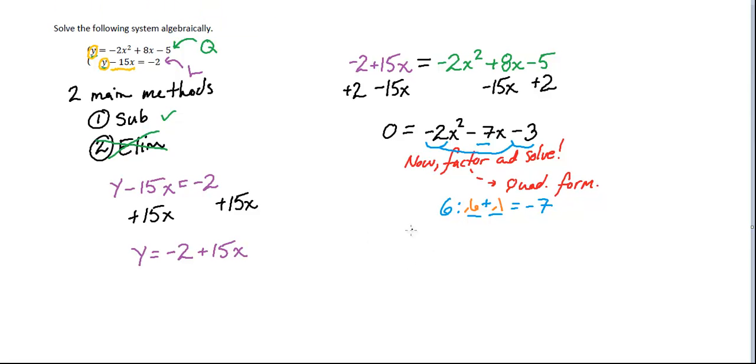So now what I've got is negative 2x squared minus 6x minus, well, we'll just say x minus 3. And now I'm going to go ahead and group these bad boys. Alright, well, the GCF of this one, that's going to be negative 2x.